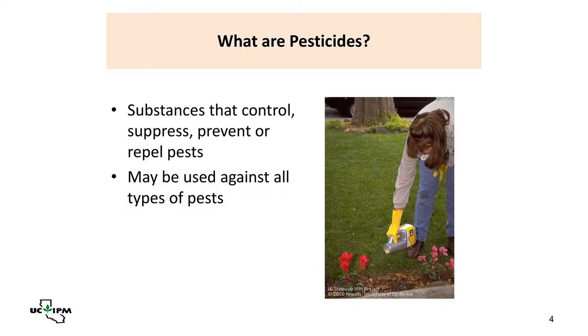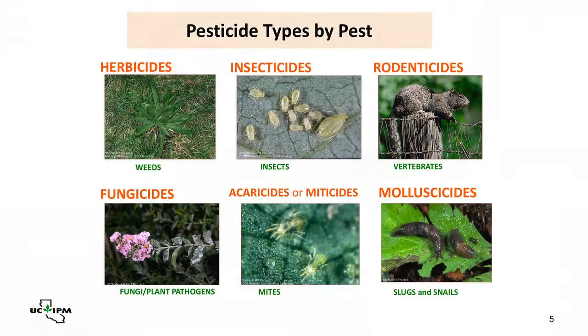What are pesticides? Pesticides as defined by law are substances that control, suppress, prevent, or repel pests. Some people think pesticide is a term that refers only to insecticides, but pesticide refers to a broad range of products. So herbicides suppress weeds, insecticides kill insects, rodenticides kill rodents, fungicides kill fungi, bactericides address bacterial plant pathogens, acaricides target mites, and molluscicides target slugs and snails. These are all pesticides.